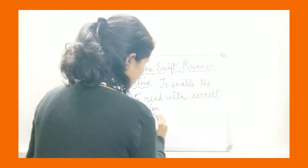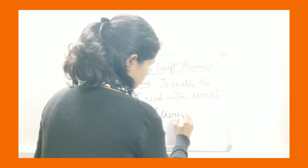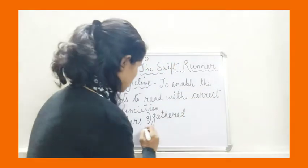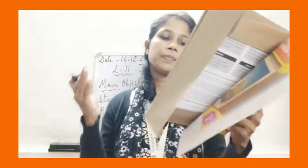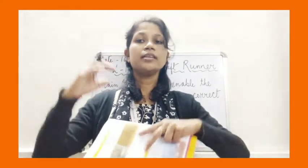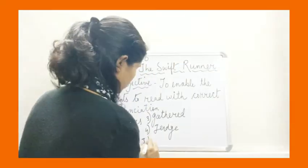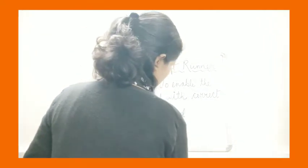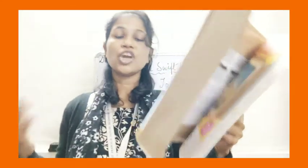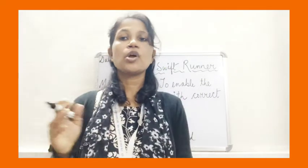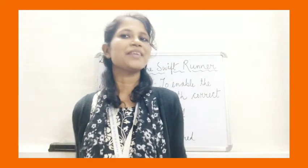The next word is 'gathered' — G-A-T-H-E-R-E-D. Gathered means to come together. Next is 'judge' — J-U-D-G-E. A judge is the person who decides the winner — who generally decides the particular winner of any kind of competition. Next is 'disappeared' — D-I-S-A-P-P-E-A-R-E-D. Disappeared means went out of sight, could not be seen anymore — a person is almost lost from our eyes and we are not able to see them.